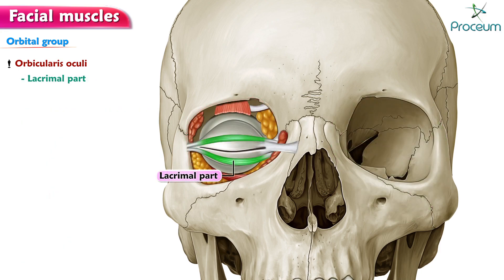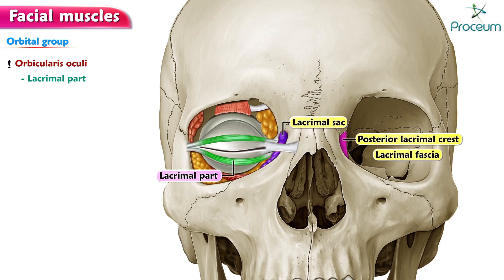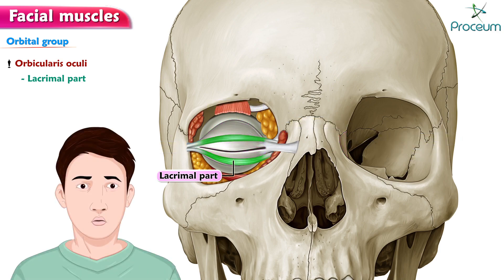Lacrimal part lies behind the lacrimal sac. It arises from the posterior lacrimal crest and lacrimal fascia, forming a sheath of the lacrimal sac, that passes laterally in front of the tarsal plates of both eyelids to be inserted into the lateral palpebral raffae. Action: it dilates the lacrimal sac by exerting traction on the lacrimal fascia, thus helping in the drainage of lacrimal fluid.